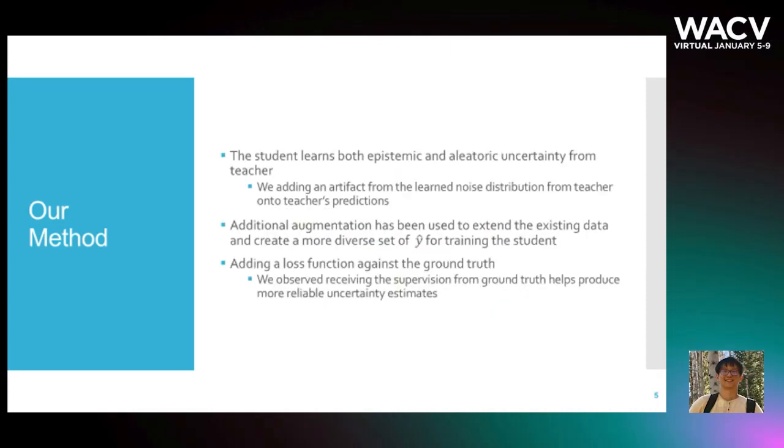In addition to the basic workflow, the student can learn both epistemic and aleatoric uncertainty from the teacher. Specifically, during training we not only sample teacher's predictions from different forward passes of the dropout-enabled neural network, but also add an artifact from the learned noise distribution from the teacher to each of the teacher's predictions.